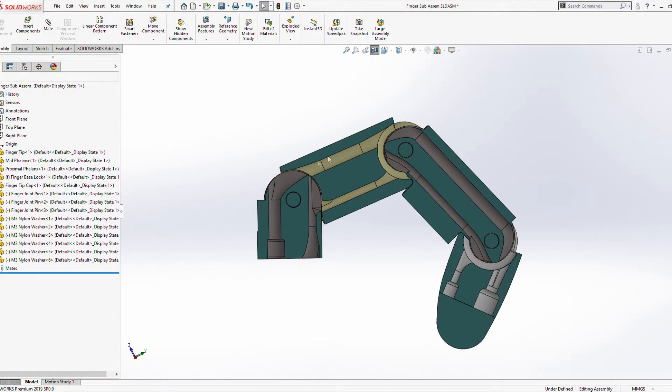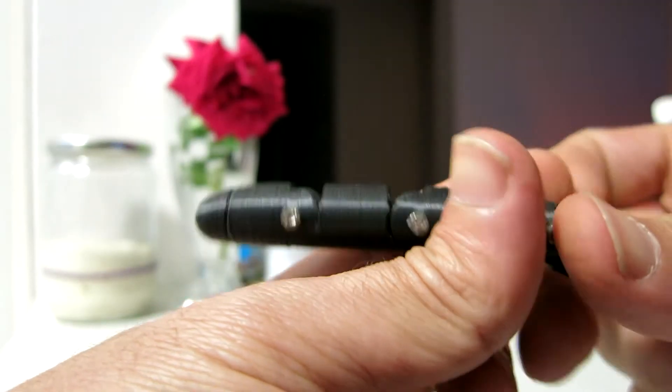Just as importantly, the finger will return to its extended position by an elastic in the back channel of the finger.